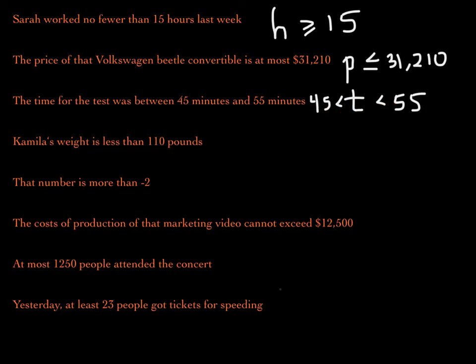Camila's weight is less than 110 pounds. It cannot equal 110 pounds — it says less than 110 pounds. So using W for weight, W is less than 110 pounds. That one was pretty straightforward. Next: that number is more than negative 2. Using the letter N for that number, N is greater than negative 2.